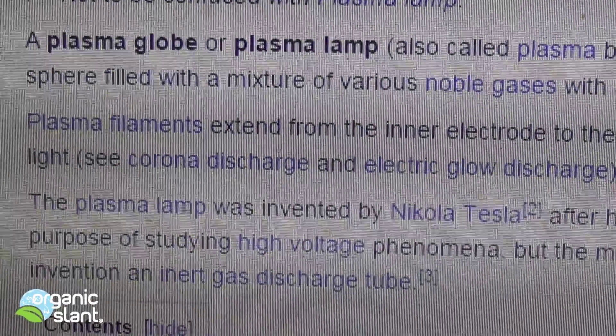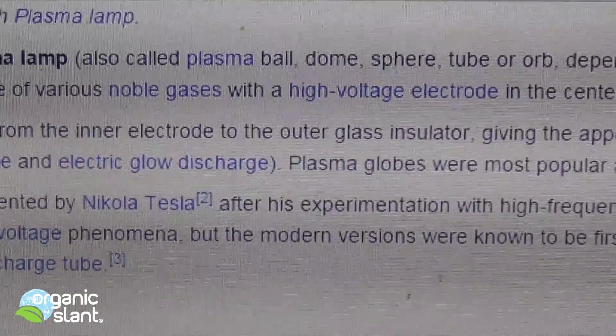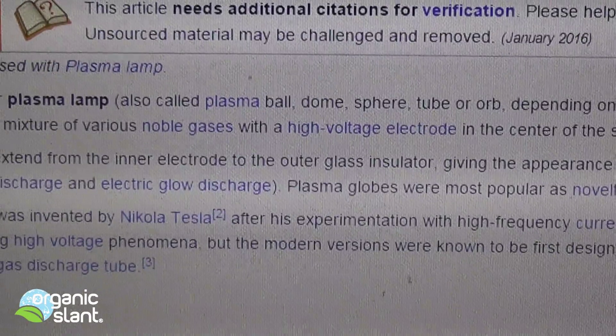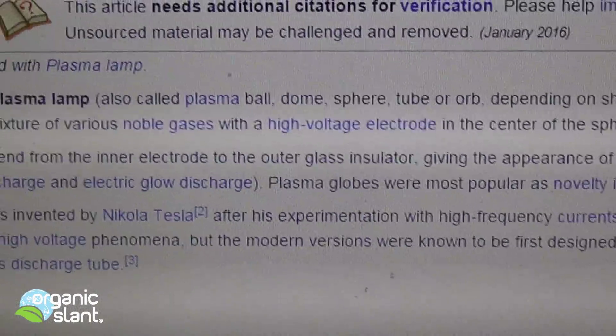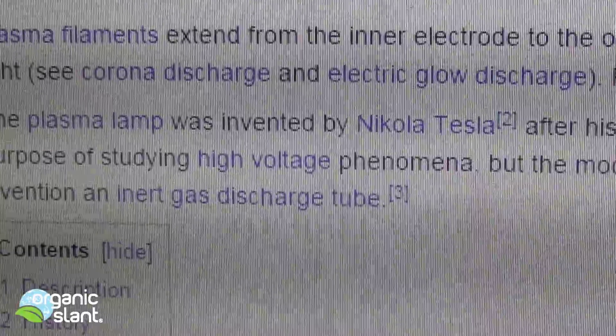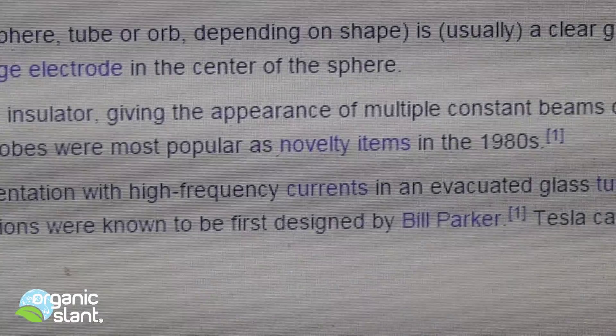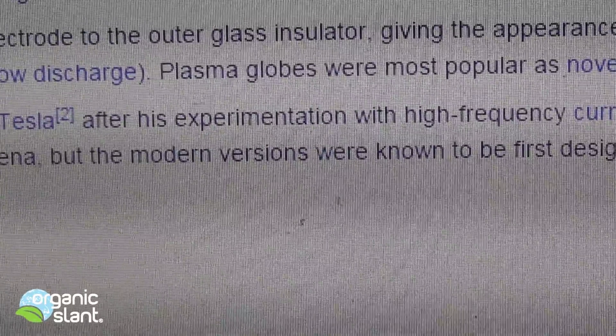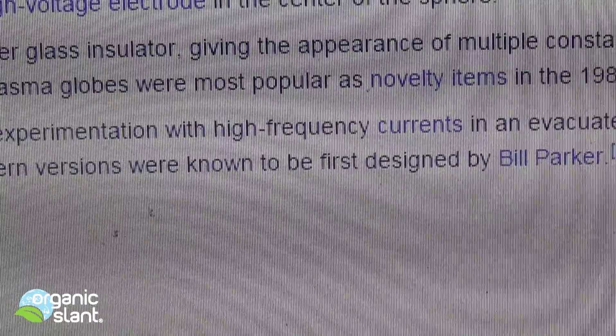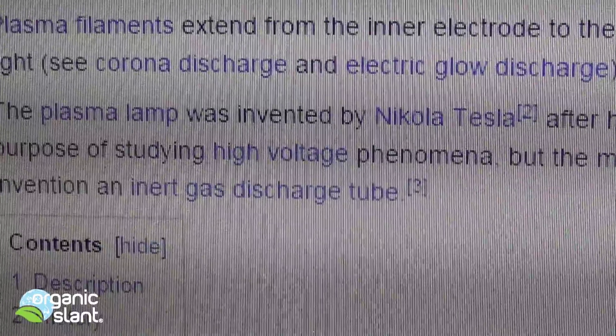This is a Wikipedia for a plasma ball. So, it says a plasma globe or a lamp. It says it's a clear glass filled with a mixture of various noble gases with a high-voltage electrode at the center of the sphere. The plasma lamp was invented by Nikola Tesla in his experimentation with high-frequency currents. Tesla called this invention an inert gas discharge tube.